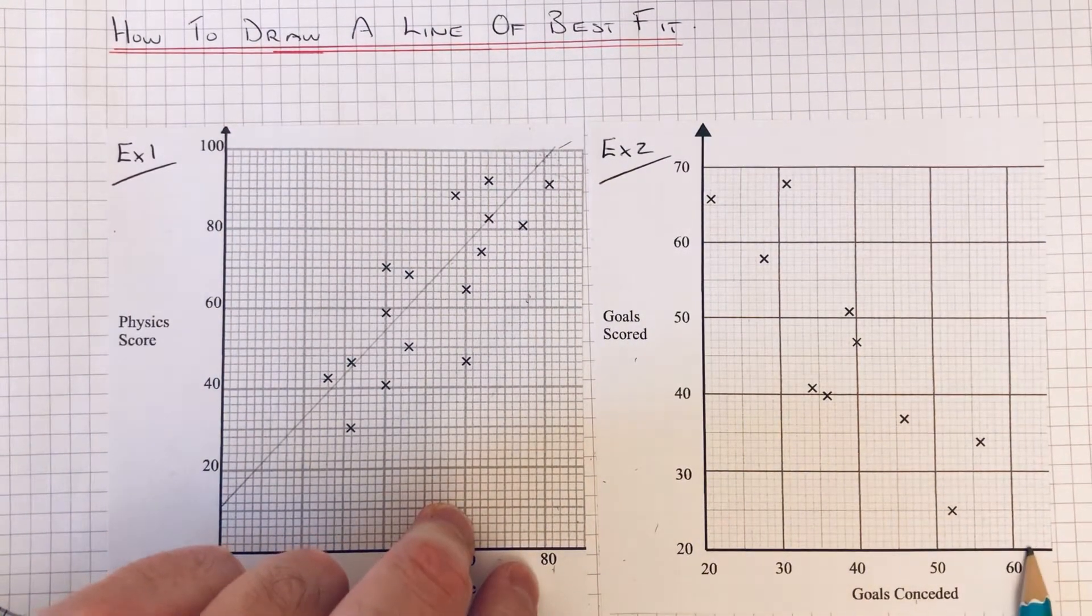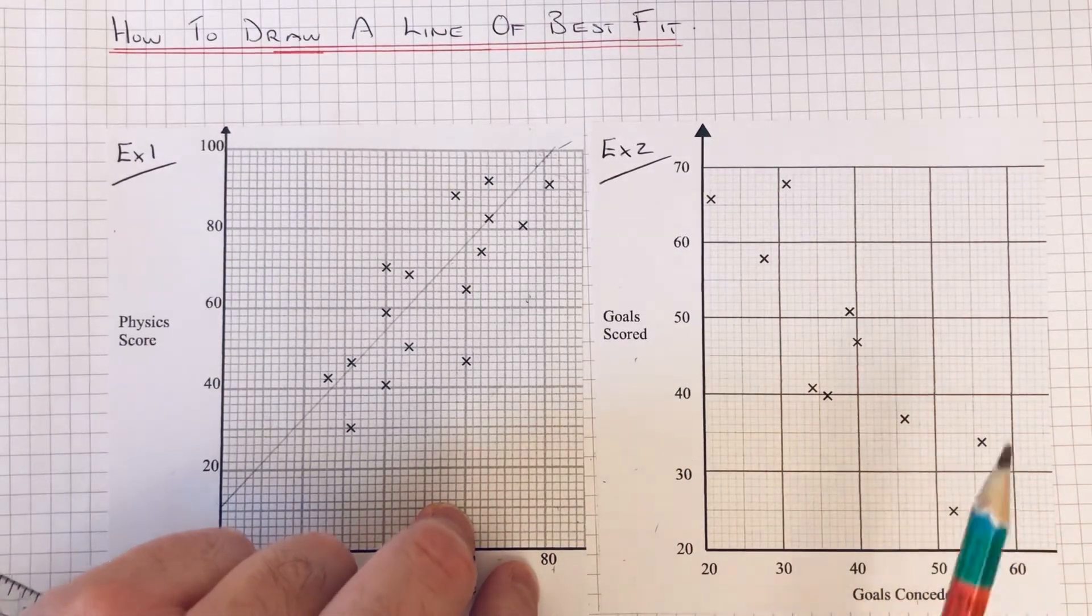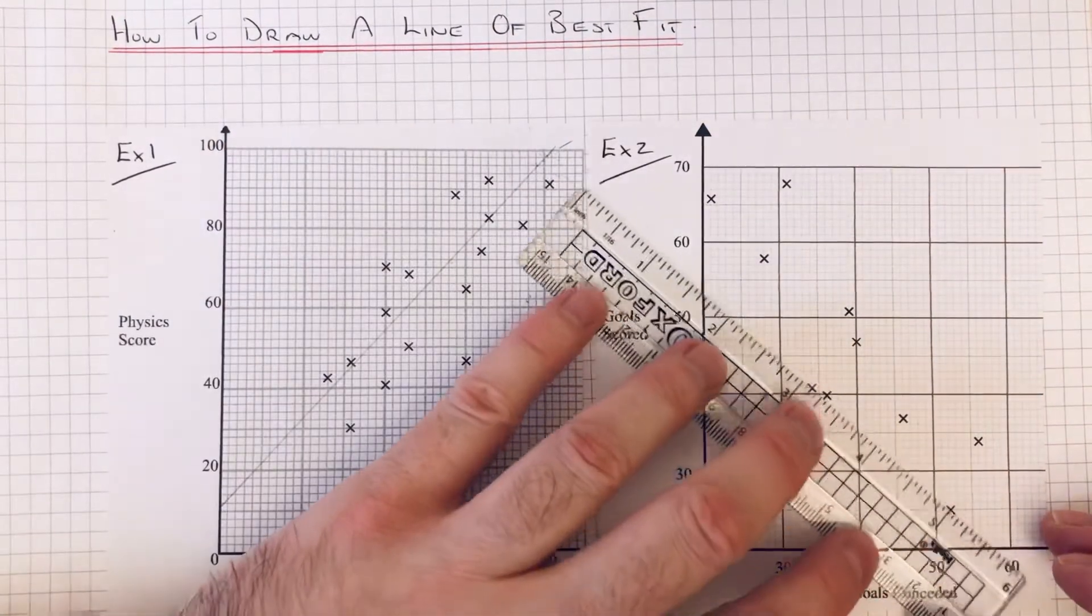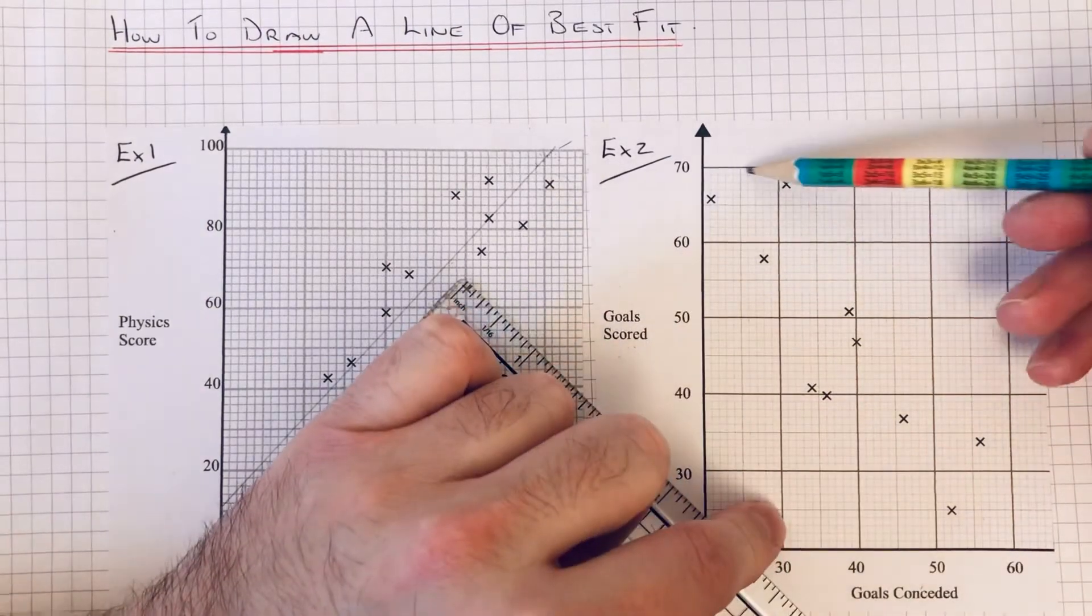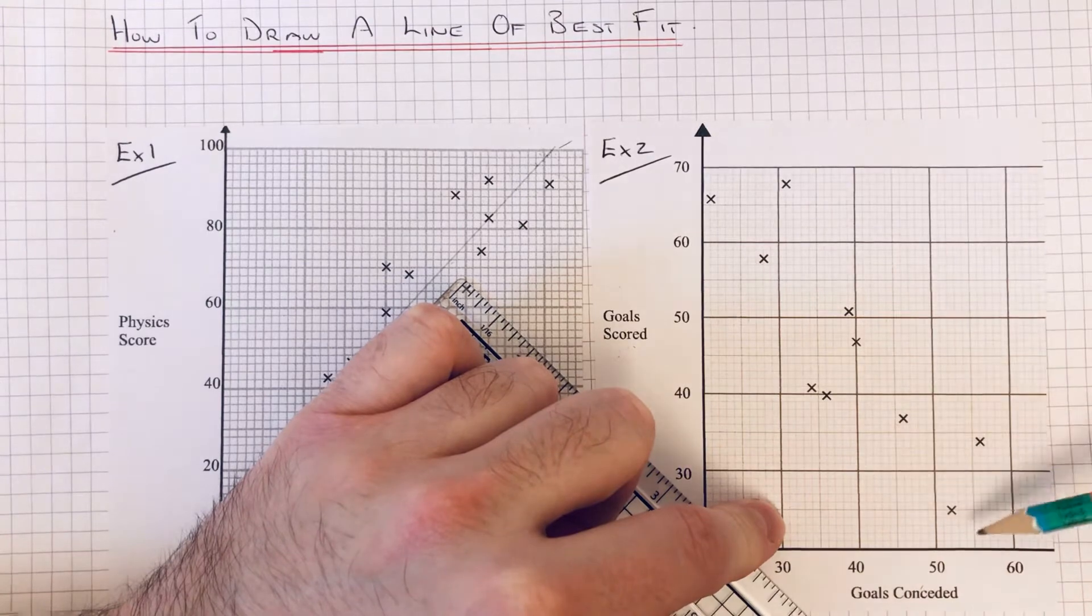So our line of best fit this time is going downwards. Again, we want to try and get the line of best fit through the center of all these points here.